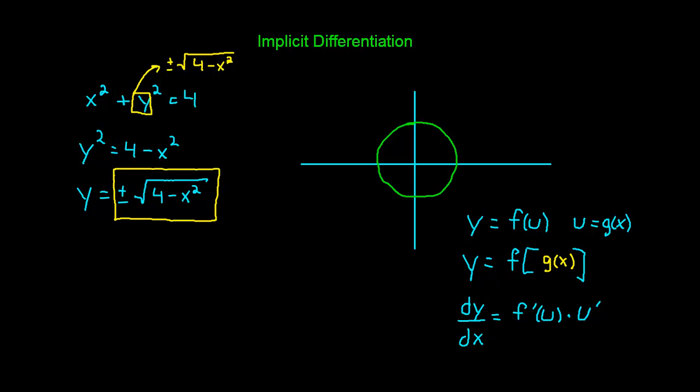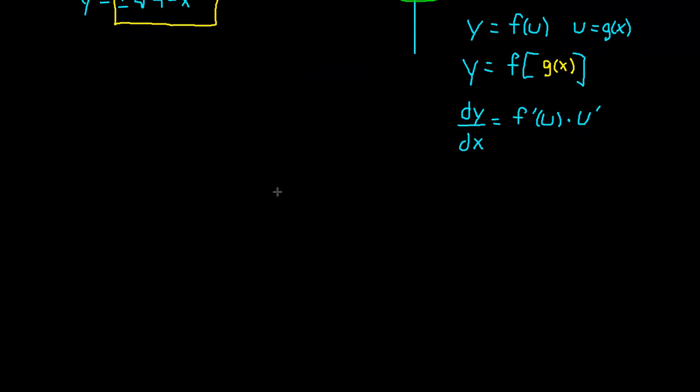Another way to write the chain rule is the derivative of y with respect to x. This is ultimately what we're interested in. How does x change as y changes? Well, how does y change as u changes? First, dy/du. And then we multiply that by the change in u over the change in x. In other words, the derivative of the outside function multiplied by the derivative of the inside function. We multiply those two together and that's our overall rate of change.